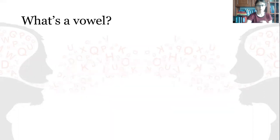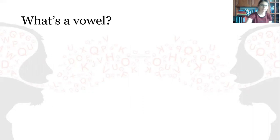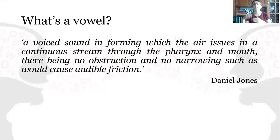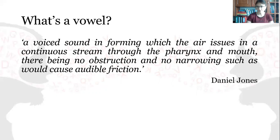So we are going to deal with consonants. Before trying to understand what a consonant is, let us remember what the vowel is. Daniel Jones says that the vowel is a voiced sound in forming which the air issues in a continuous stream through the pharynx and mouth, there being no obstruction and no narrowing such as would cause audible friction.